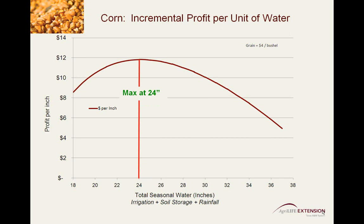In years of low input costs and high commodity prices, this point will move toward the max yield point. In years with high input costs and low commodity prices, this point will shift left on the curve toward minimum inputs. Again, however, crop production success is not measured by incremental indicators.